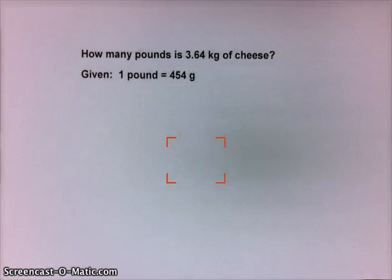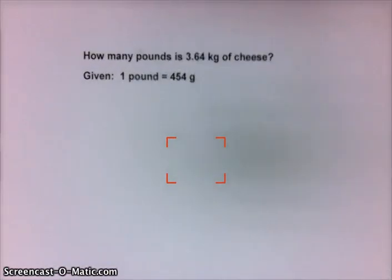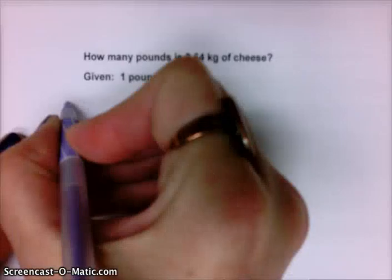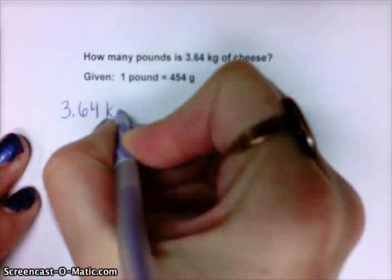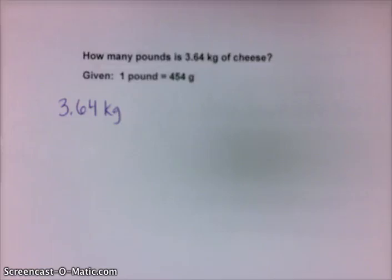So 3.64 kilograms is what we're starting with. If we get to grams, then we can use that conversion to get to pounds. So let's start with what we're given. Always start with what you're given, 3.64 kilograms. That's what we start with.